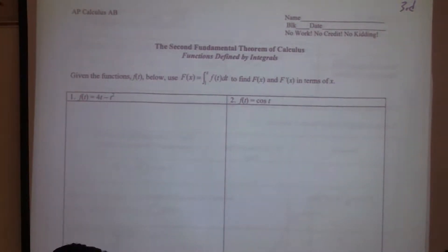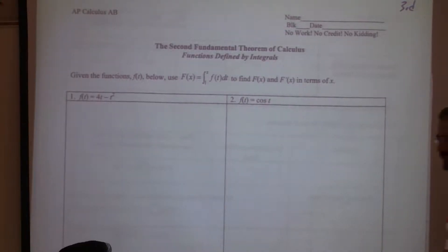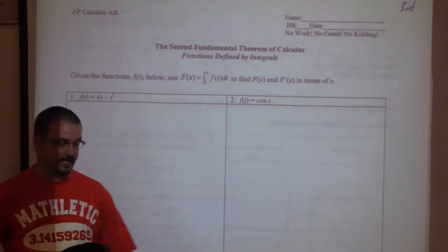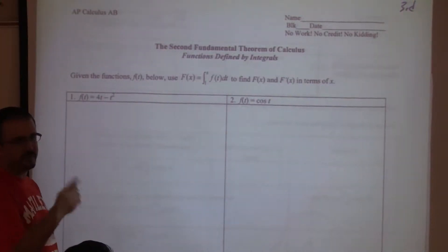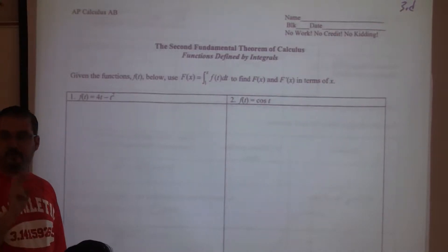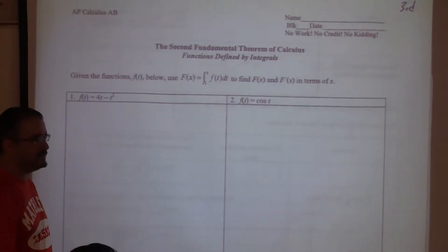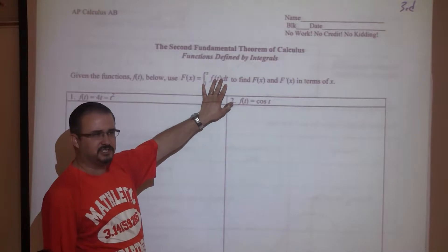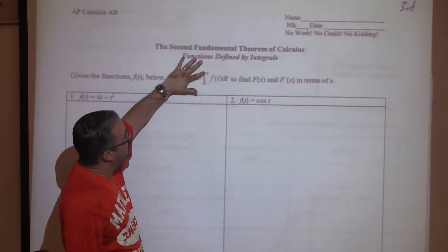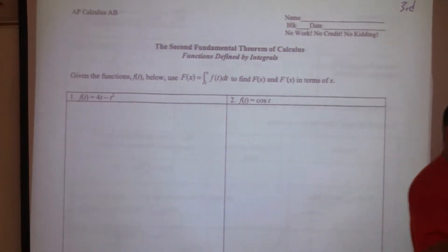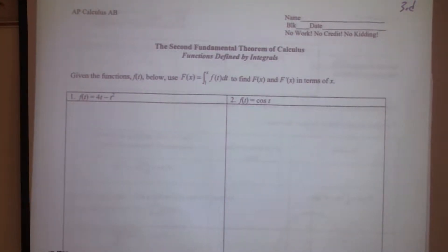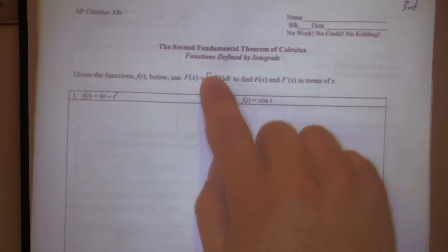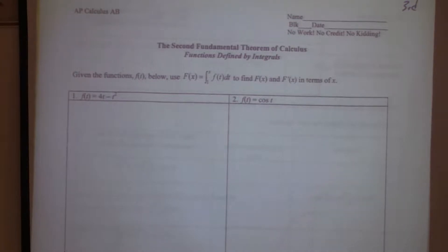We've talked about the derivative and the integral — what do they do to each other? They cancel each other out. On those problems about sand and the rate at which the amount of sand is changing, you had to get the derivative of that integral function. There was always only one variable at the top, like from 0 to t, or 1 to t. That variable expression was only a single variable, a single letter.